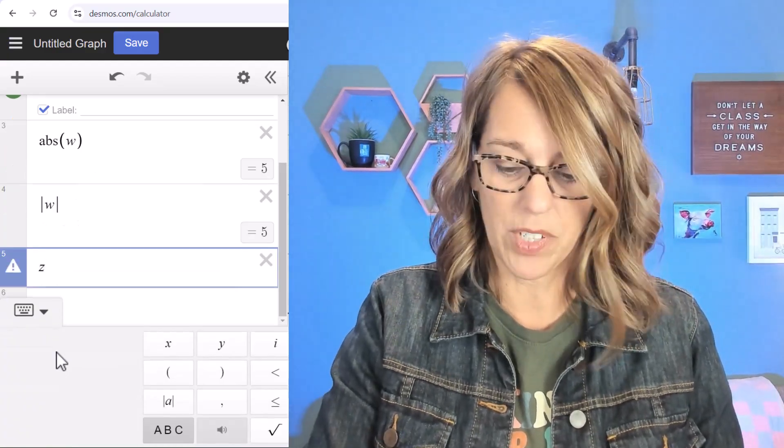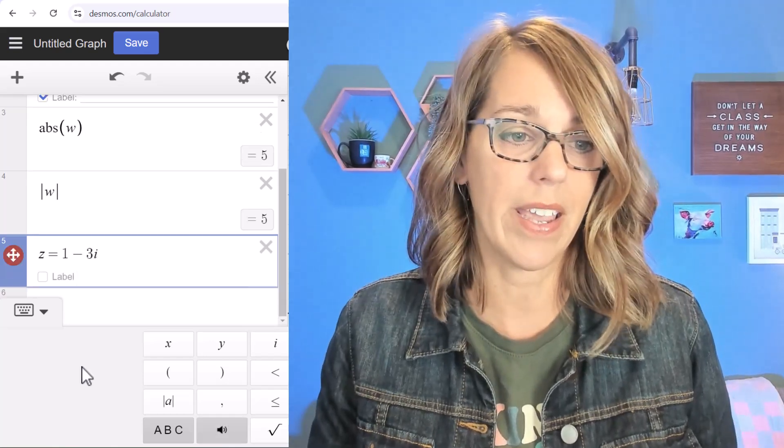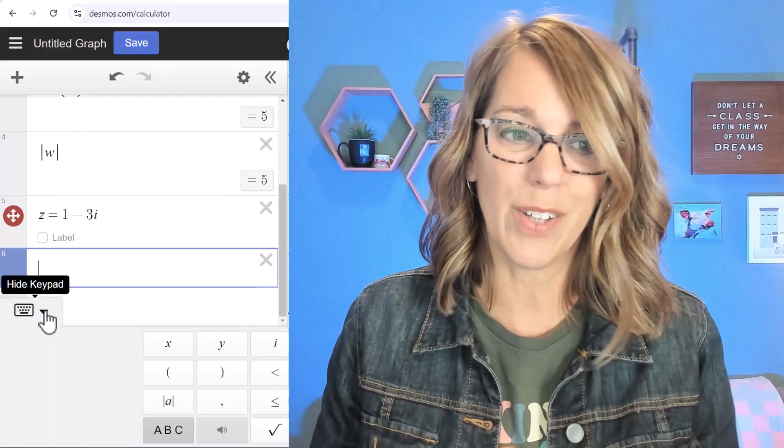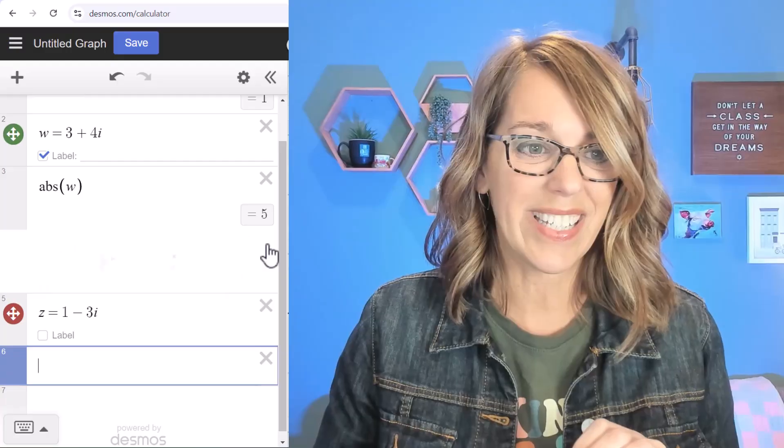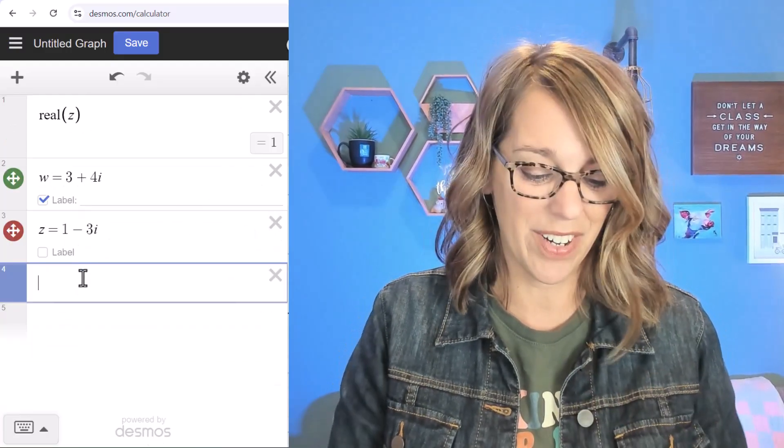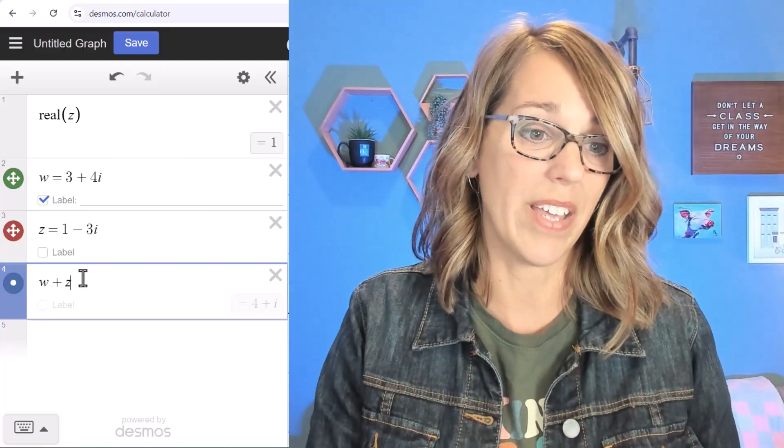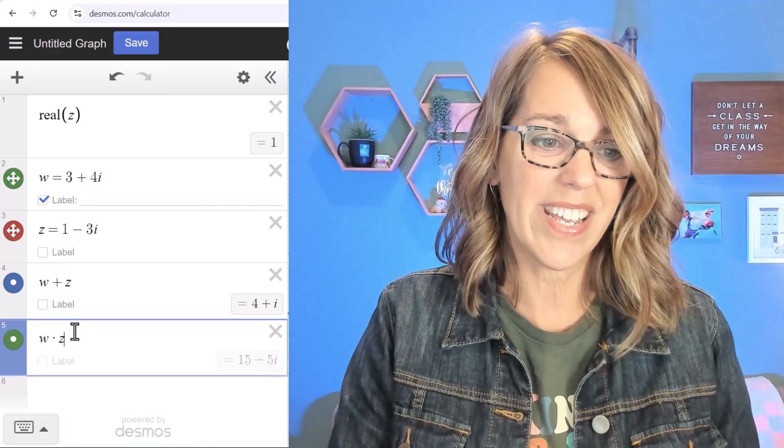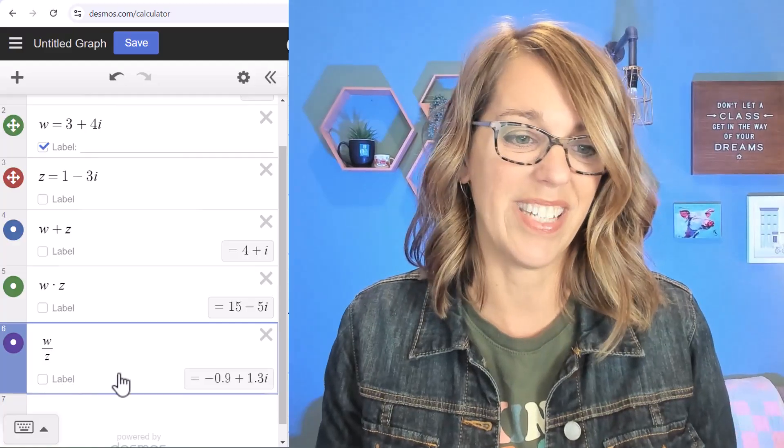Now in addition to w, let's define z as well. So I'm just going to put z back up here as 1 minus 3i. And I can do some operations with these two. I want to close my keypad so I've got a little more room. I'm going to delete those modulus so you can see the w and the z together. And now I can recall those and do some operations like w plus z. I can do w times z. And I can do w divided by z.